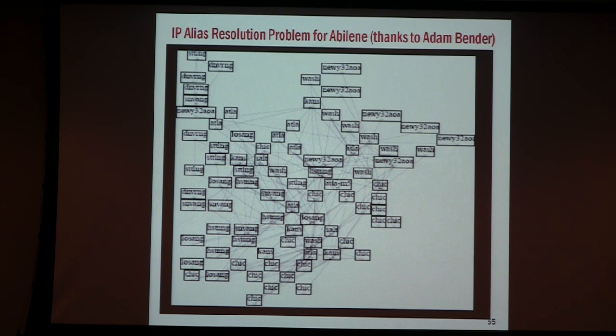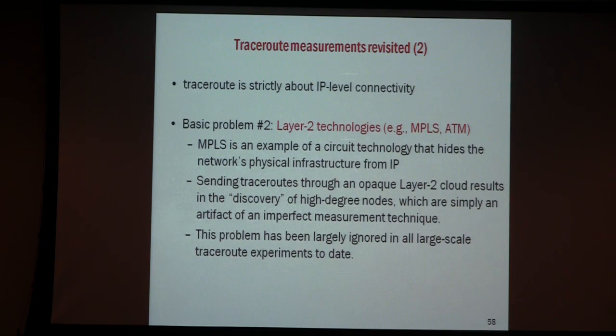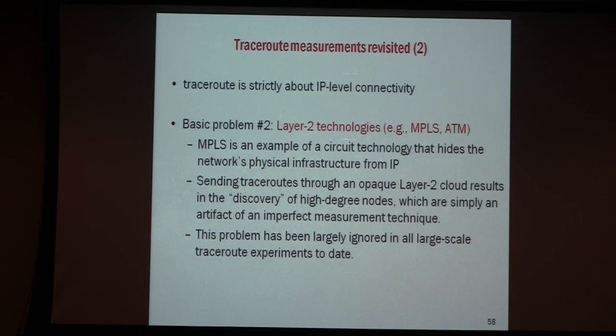Even if you had a solution to the alias problem, you still have the MPLS problem. Many networks today — traditional service providers — use layer-2 technology to shift traffic within their own network. A packet that enters AT&T's network comes in on the ingress side at the IP level, and then it disappears from the IP level and only comes back out on the egress side. So if you have a network with 1,000 routers, it looks like a complete mesh.